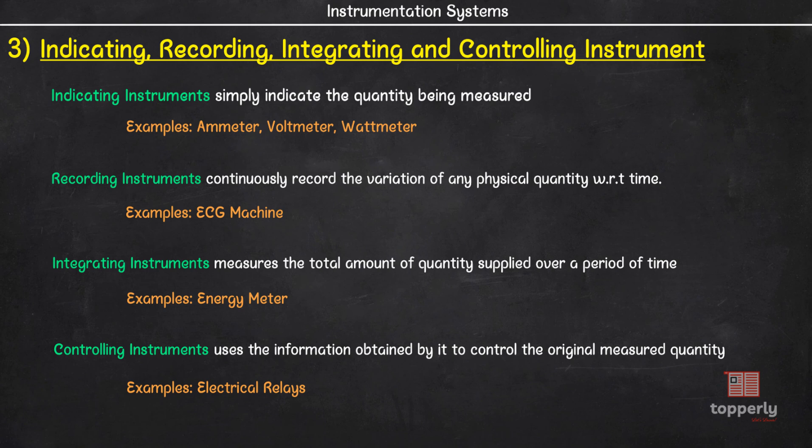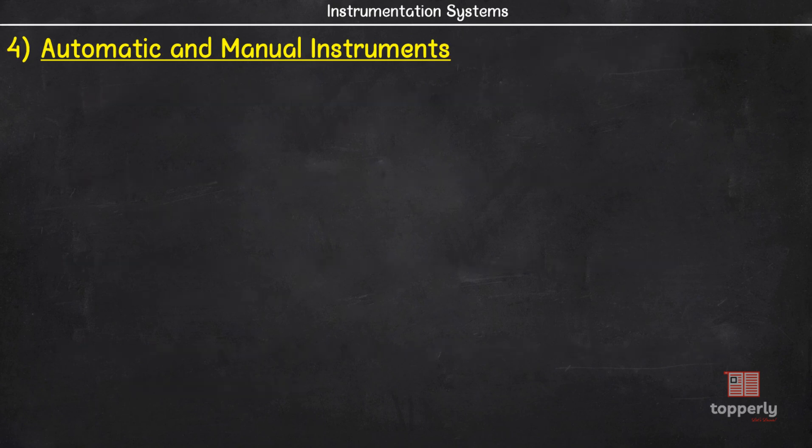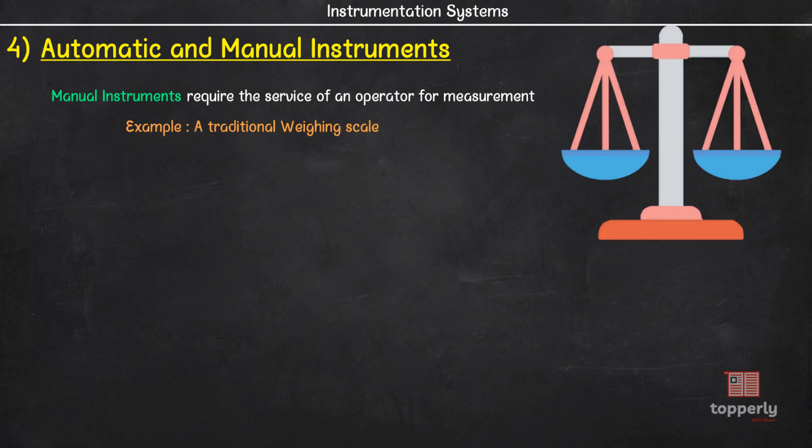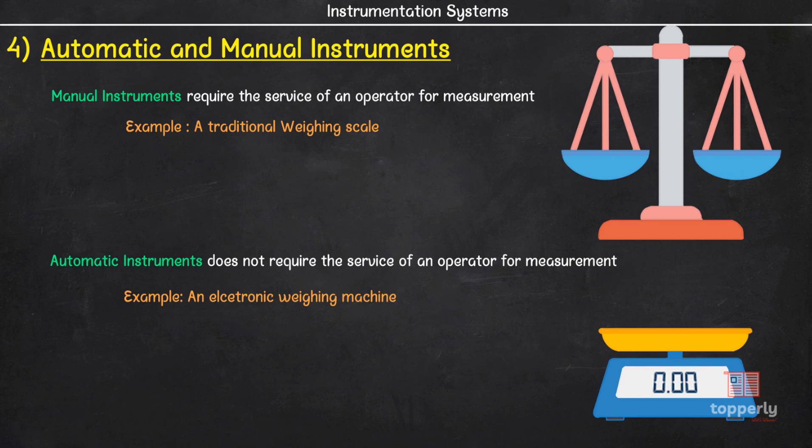We classify instruments based on whether they are automatic or require manual supervision. In the case of manual instruments, the service of an operator is required. An example is a traditional weighing scale. Meanwhile, automatic instruments does not require an operator. An electronic weighing machine is an example as it indicates the weight without requiring any manual assistance.